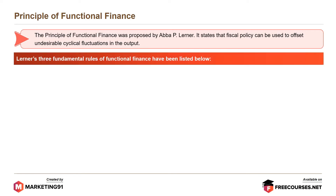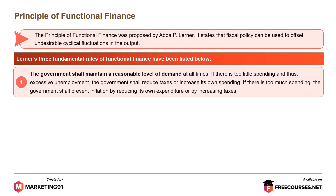Lerner's three fundamental rules of functional finance are: First, the government shall maintain a reasonable level of demand at all times. If there is too little spending and thus excessive unemployment, the government shall reduce taxes or increase its own spending. If there is too much spending, the government shall prevent inflation by reducing its own expenditure or by increasing taxes.